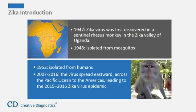Following its introduction into Brazil in 2015, the virus spread rapidly across the Americas. In July 2015, Brazil reported an association between Zika virus infection and Guillain-Barré syndrome.